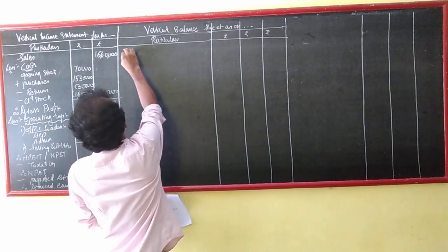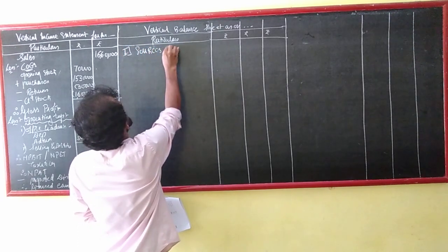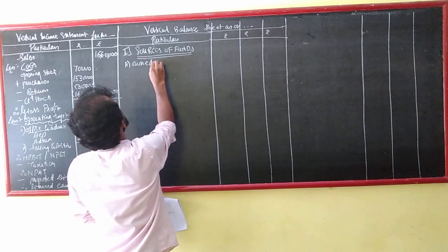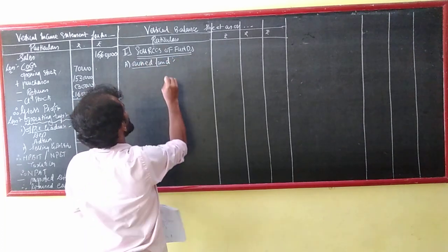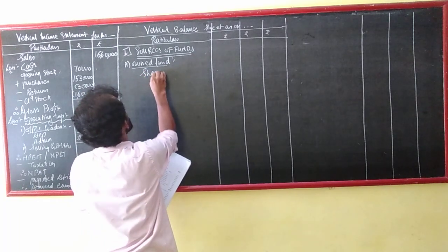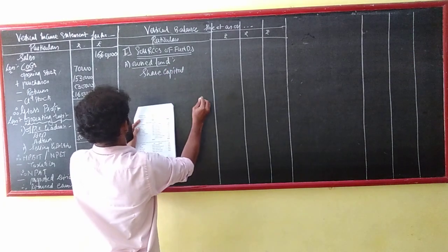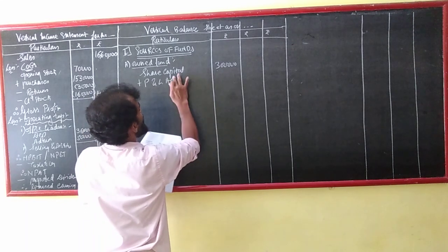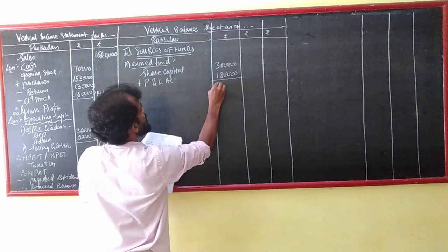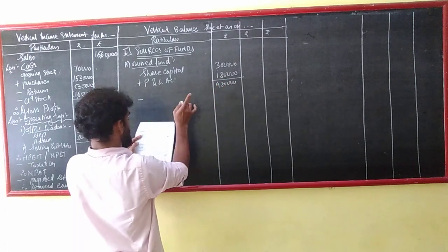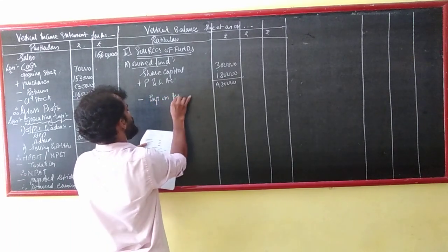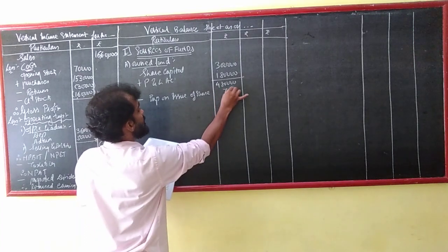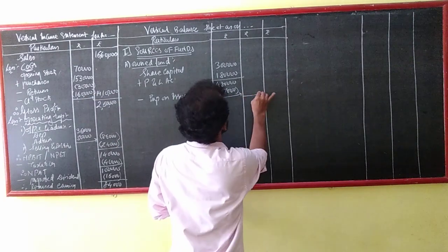I will now show sources of funding. First, own fund. Share capital: 3 lakh, clearly given. Profit and loss: 1 lakh 80, even that is clearly given. So 4 lakh 80. Expenses on the issue of shares - you should remember everything.